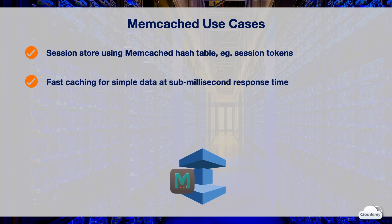Memcached is suited for fast in-memory storage of simple data. ElastiCache for Memcached can serve frequently requested data at sub-millisecond latency. You can use Memcached to store results of simple queries and offload heavy reads from the database.